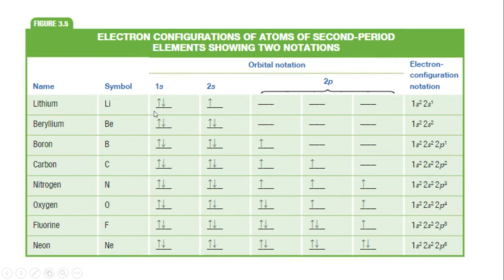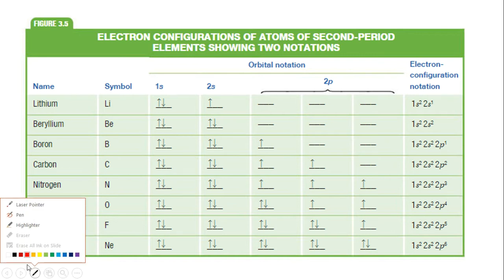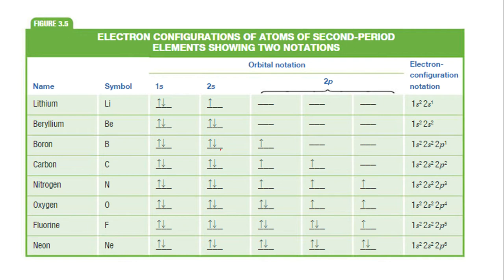So what does that mean? We draw these little lines or boxes to designate where these electrons are even more specifically. We're focusing in even more from the 1s2, 2s1 address to even more specifically what's going on. There are two things you might notice: first, the electrons don't ever go into one of these orbitals in the same direction — it's either one up and one down, or just one up by itself. And the other thing is that rather than coupling up, they go into their own space until there's no more space, and then they start doubling up.